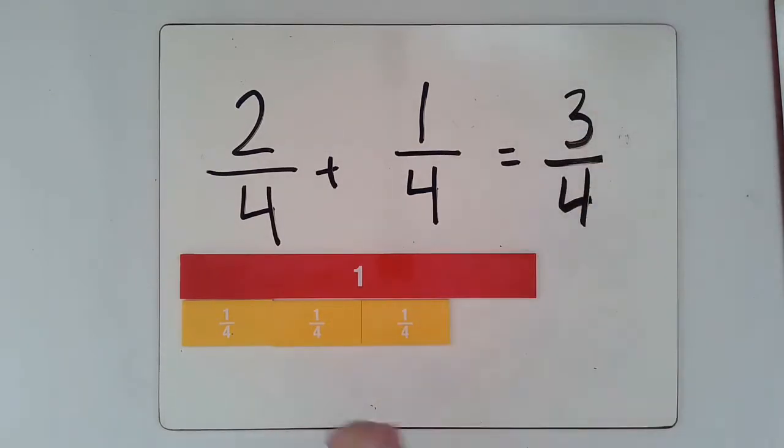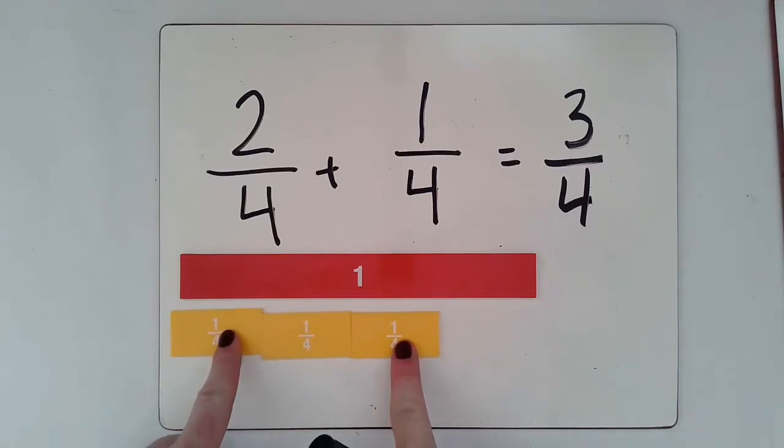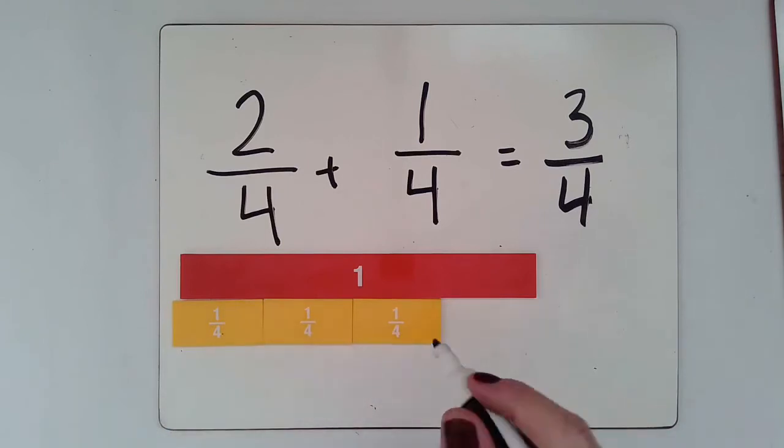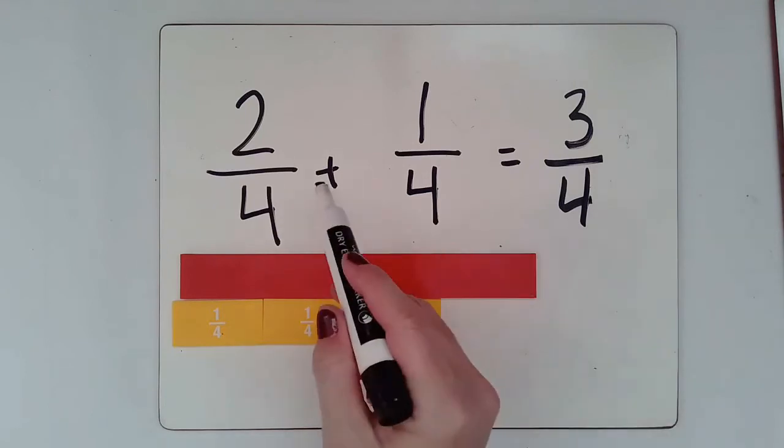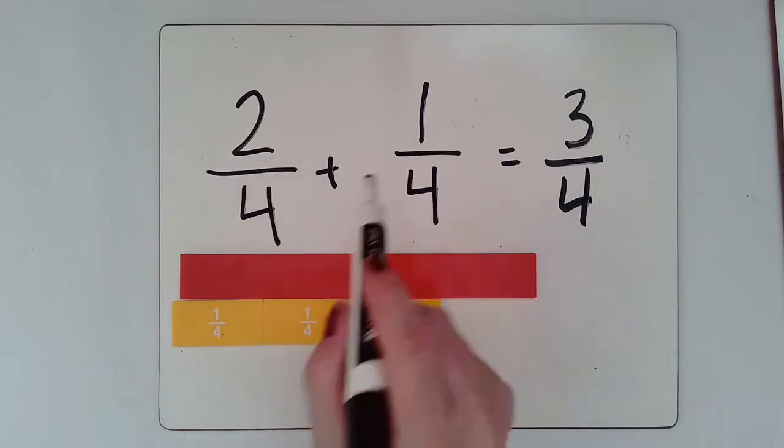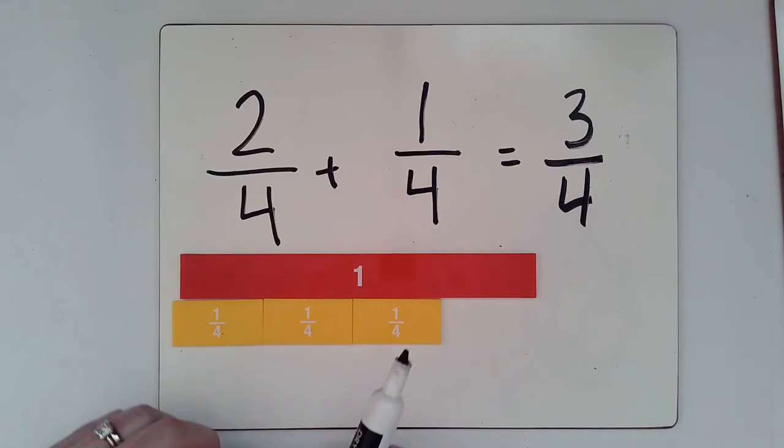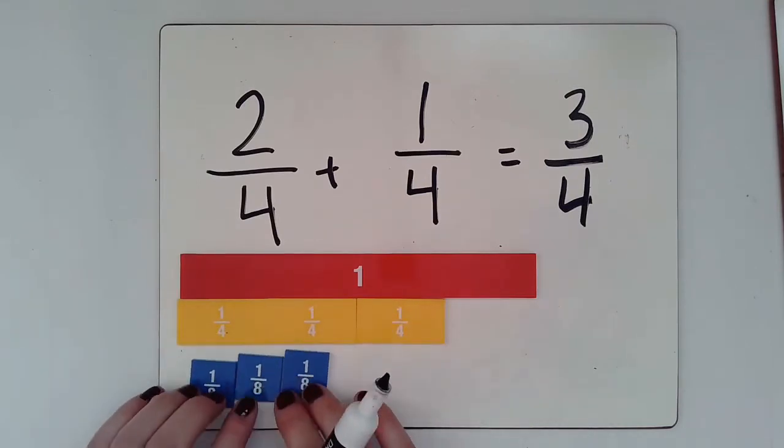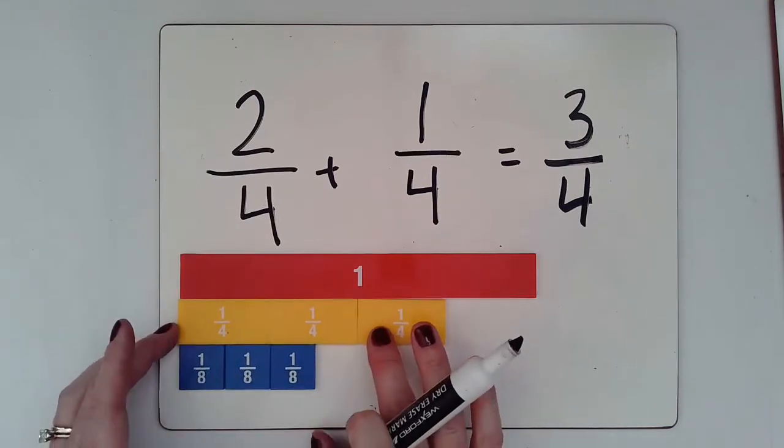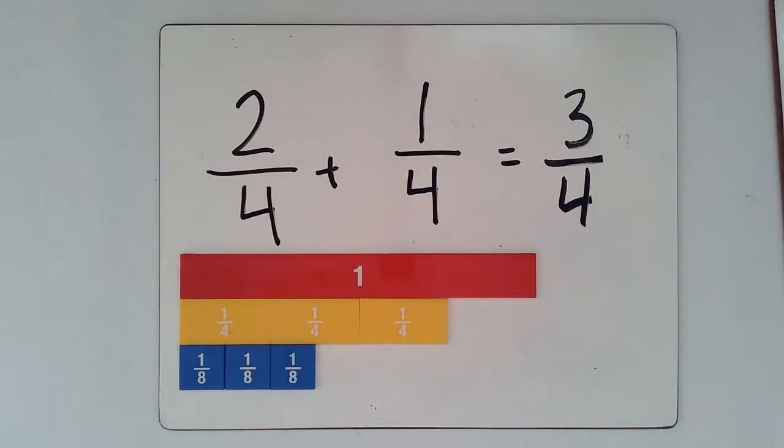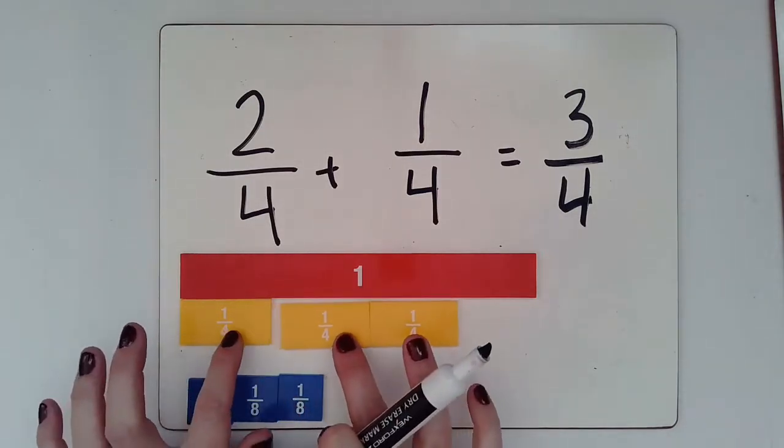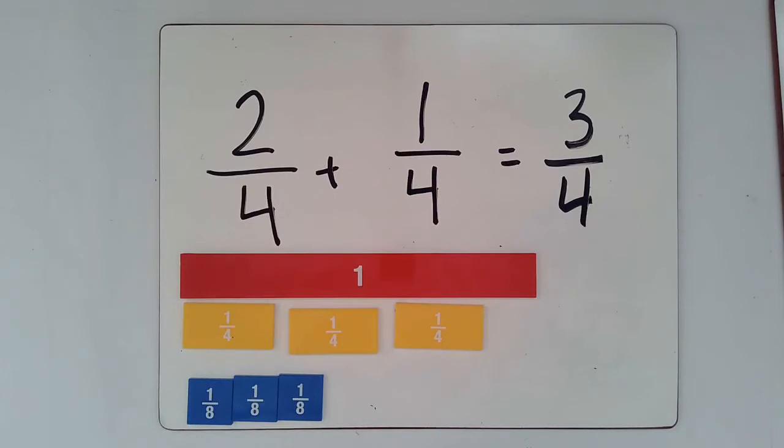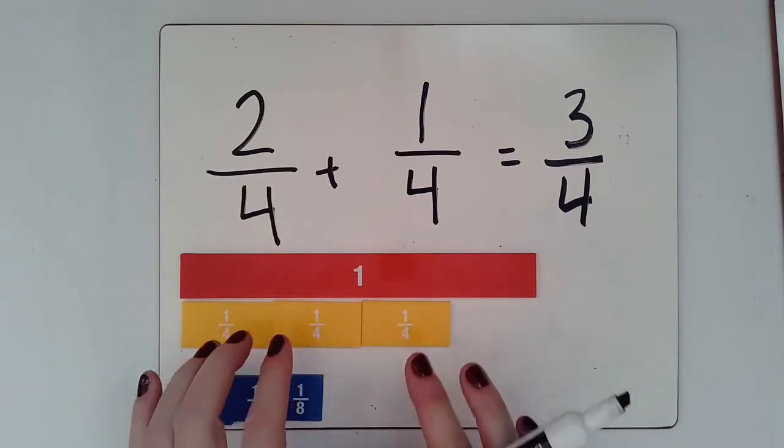Because really I'm just adding two fourths and three fourths together. Now notice in this problem how our denominator did not change. Some people may want to think of this as three eighths. As you can see here, three eighths would be significantly smaller than three fourths. Because remember, we're just adding these three pieces together, which would give us three fourths.